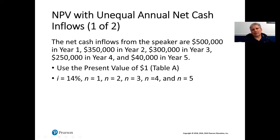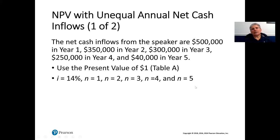Now we look at unequal annual cash flows, which is tougher. We must find the present value of each individual cash flow — $500,000, $350,000, $300,000, $250,000, $40,000 — using the present value of a single dollar (Table A), since each amount is different. At 14%, the factors are: year 1 = 0.877, year 2 = 0.769, year 3 = 0.675, year 4 = 0.592, year 5 = 0.519.